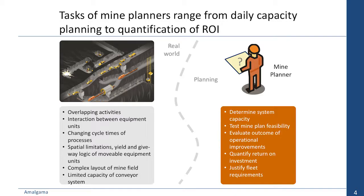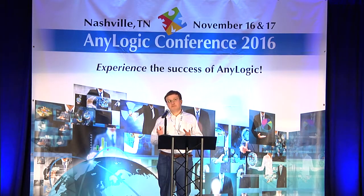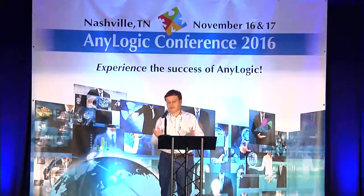Let's put ourselves in the shoes of mine planners who have to take decisions and make commitments. They have to determine what the system capacity is, test the feasibility of mine plans, evaluate the outcome of different types of operational improvements, and quantify return on investment. Traditionally they make assumptions. For example, the average haulage cycle distance is an assumption which is never close to reality because the cycle time differs from point to point and from time to time, influenced by so many parameters that nobody can control.